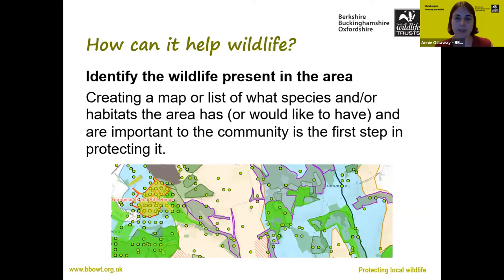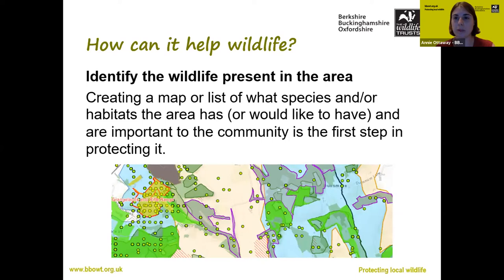Gathering this data — you can often get most of it from your local record centre. You'd want to gather data on the habitats you have and any sites designated locally or nationally for nature conservation. You can also get species record data, so all the points on that map would be for a particular species that somebody has submitted a record for. That's a really good first step, and it can sometimes just help protect wildlife simply by lots of people realising it's there in the first place.